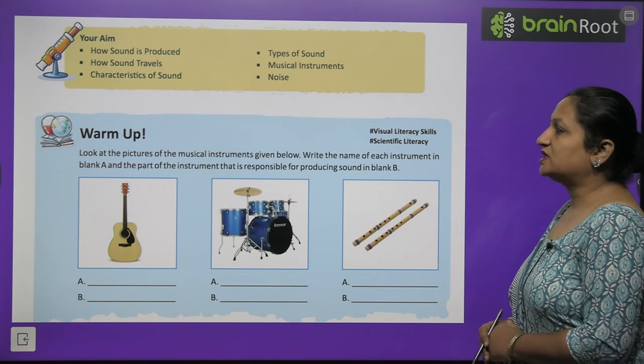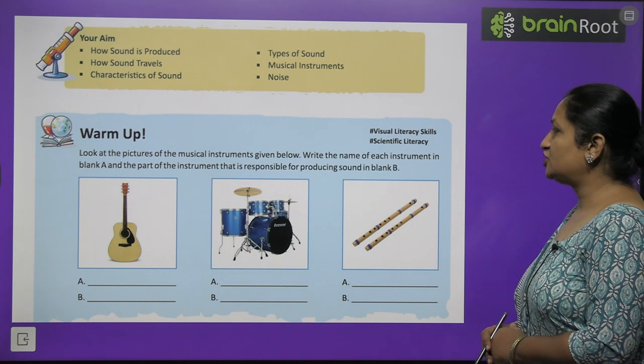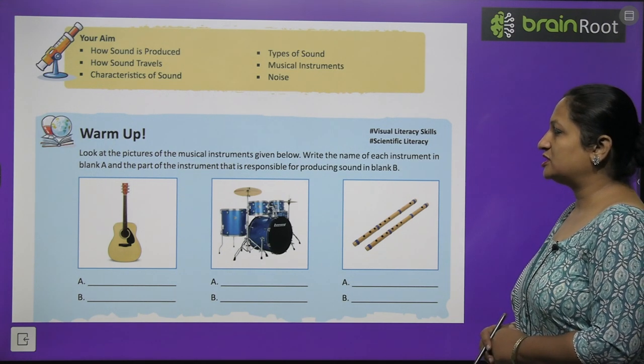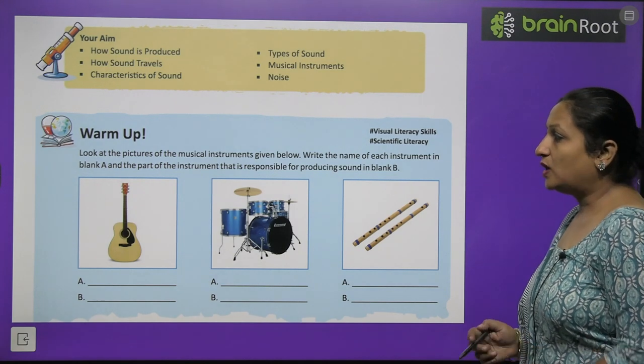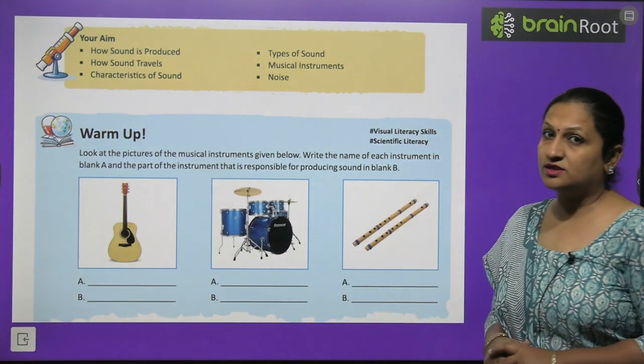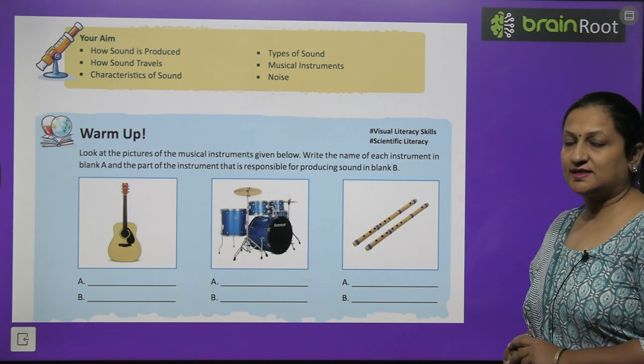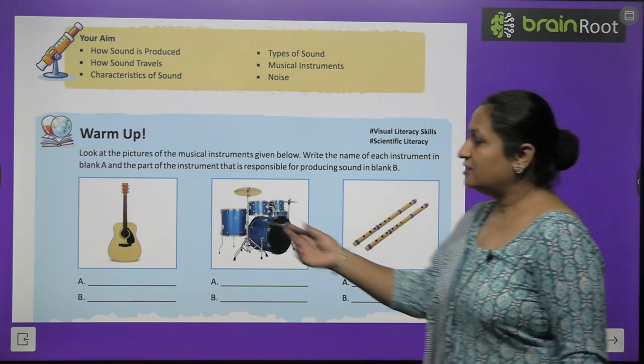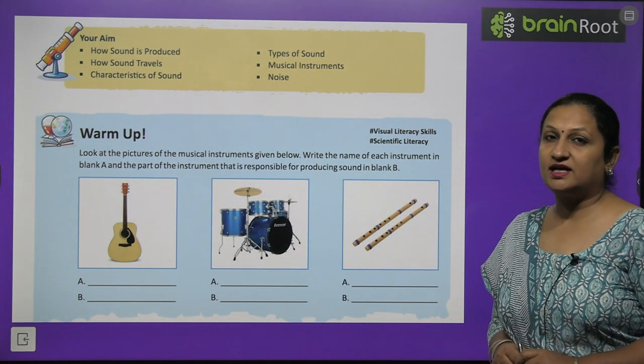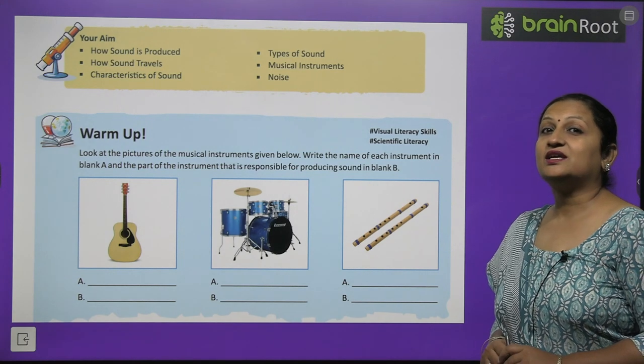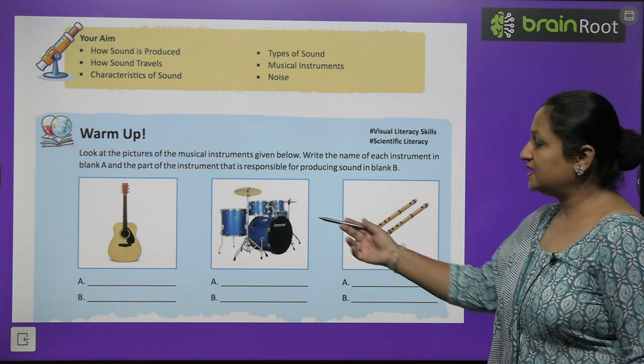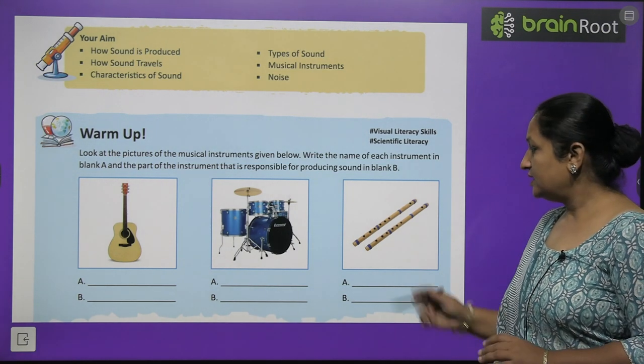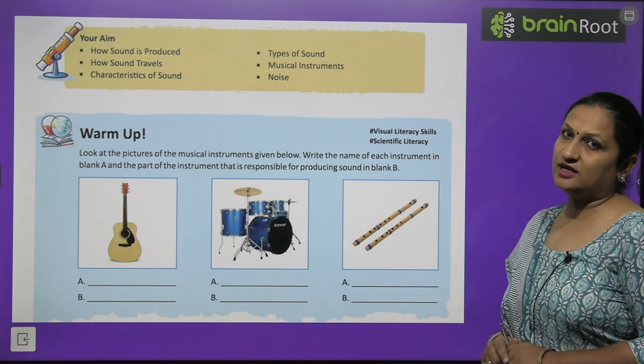Have a look at the warm up. Look at the picture of the musical instruments given below. Write the name of each instrument in blank A and the part of the instrument that is responsible for producing sound in blank B. You need to identify which musical instruments these are and which part produces sound. This is your homework. First one is a guitar, which is a stringed instrument. This is a drum, which is a percussion instrument, and this is a flute, which is a wind instrument.